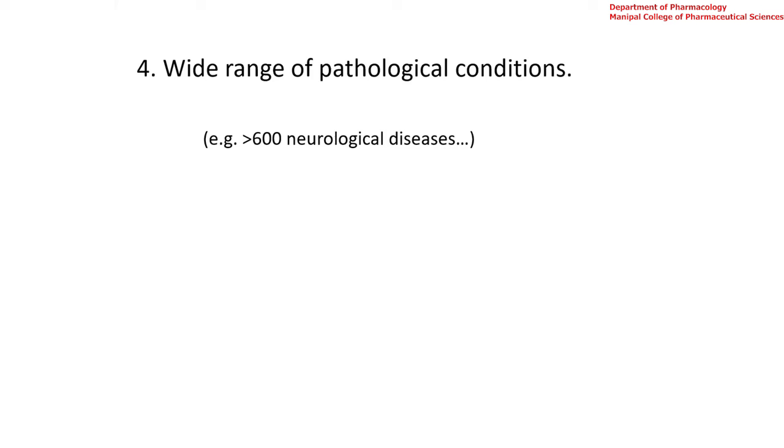The fourth reason is that there are a wide range of pathological conditions affecting the central nervous system — neurological disorders, behavioral disorders, and neurodegenerative disorders. These include Alzheimer's, Parkinson's, depression, insomnia, epilepsy, schizophrenia, mania, social phobias, obsessive-compulsive disorders, and autism, among many others. Do you know how many neurological conditions exist? There are more than 600 neurological diseases. That is another reason why it is very important to understand CNS physiology, pathology, and the drugs affecting the CNS.